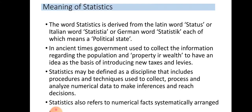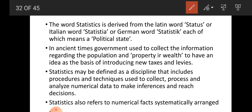Coming to the etymology, the word statistics is derived from the Latin word 'status', the Italian word 'statistia', or the German word 'statistic', each of which means 'a political state'. So we have three words — Latin 'status', Italian 'statistia', and German 'statistic' — each meaning political state.